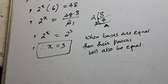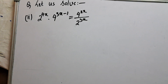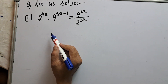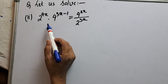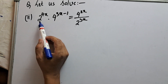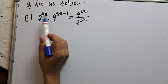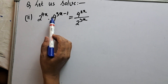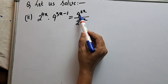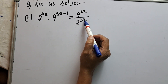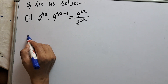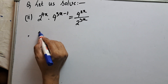Now let's do the next question to understand this topic better. We have an equation and we are asked to solve it — solve means find the value of x. The equation is: 2 to the power 4x times 4 to the power 3x minus 1, in the left hand side, equals 4 to the power 2x upon 2 to the power 3x on the right hand side.